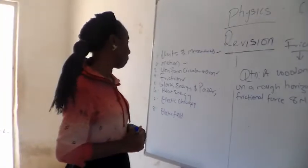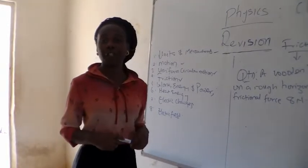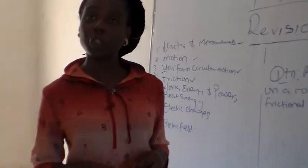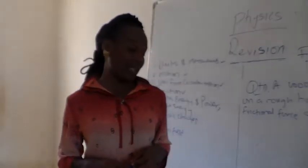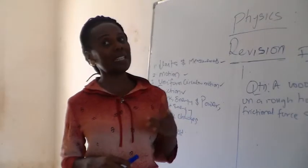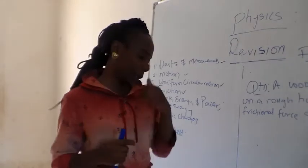I'm moving on to friction. What is friction? Friction is a force of opposition. It opposes the motion between two surfaces in contact and two surfaces that tend to move against each other.